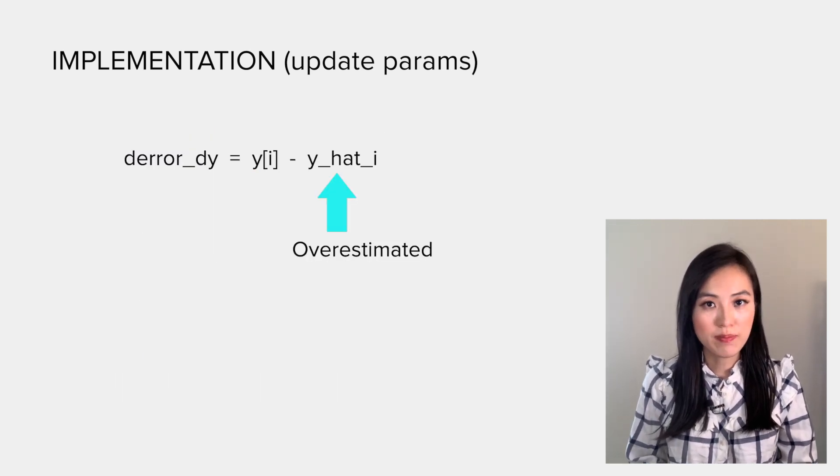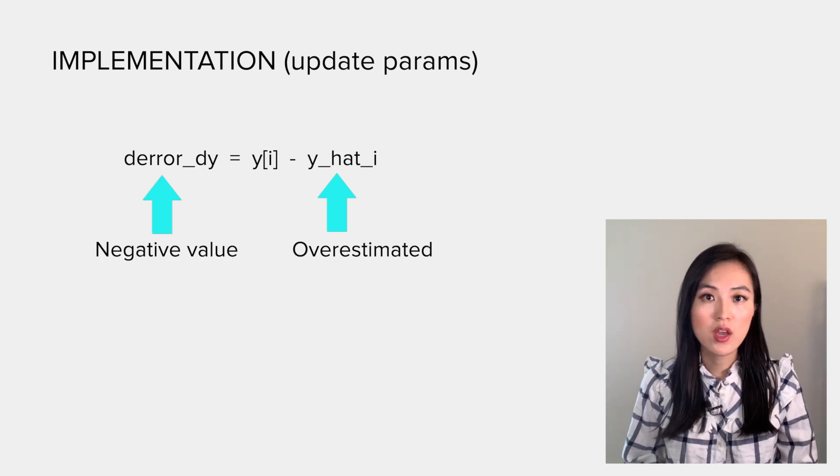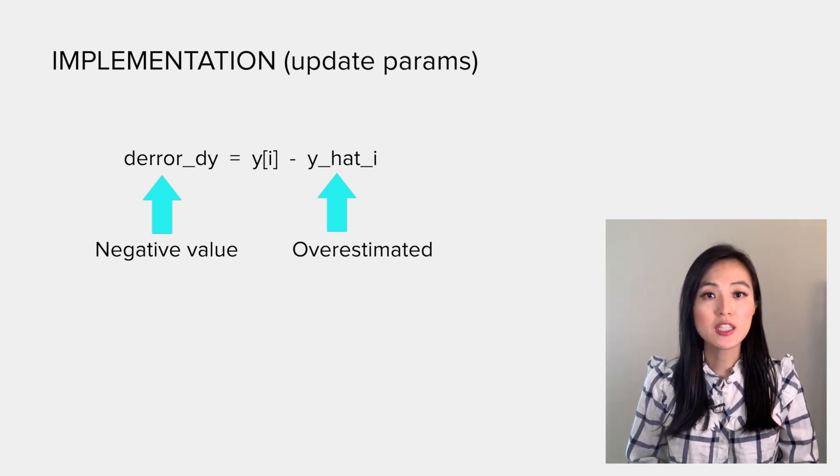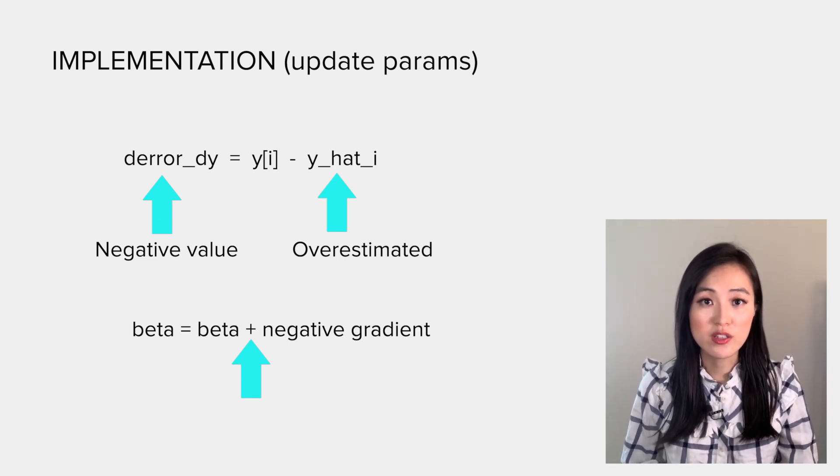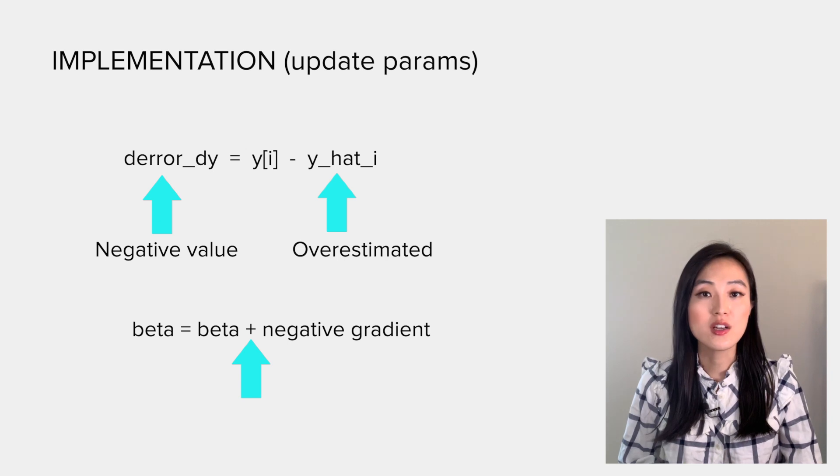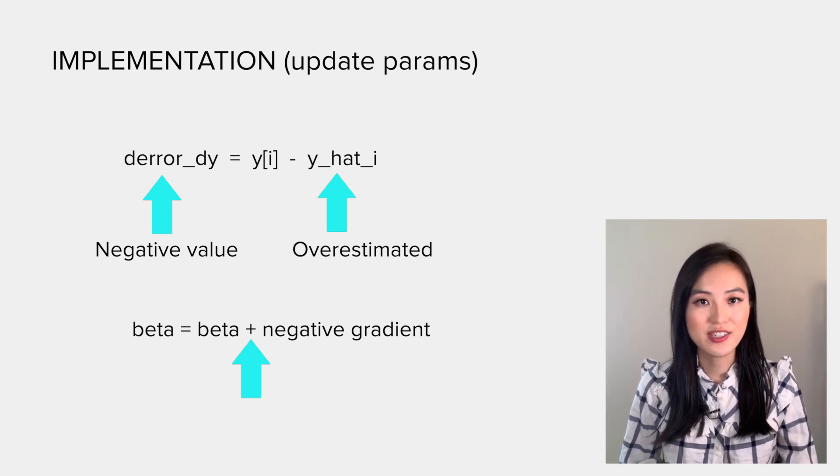So if y is overestimated, the gradient of error with respect to y would be a negative value. That's why we add the gradient to betas. During interviews, it's worth explaining the reason so that the interviewer is convinced that you truly understand it.